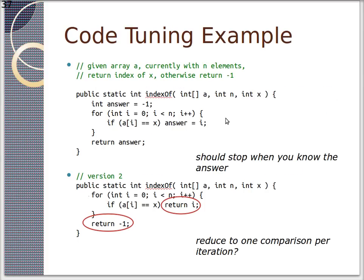So here's a code tuning example. We've got an array, and we want to return the index of x in the array. So if it exists at index 2, return 2. So basically, the simple approach is get the array, get the size of array, get the value we're looking for. For i equals 0, i less than n, does x exist in that array? If so, i, the index, is the answer, and return the answer.